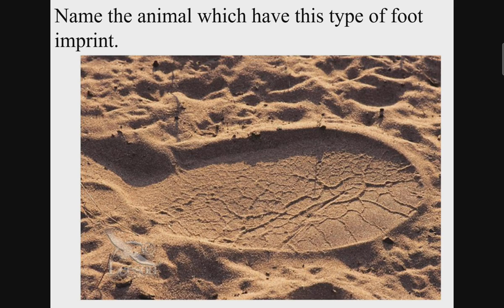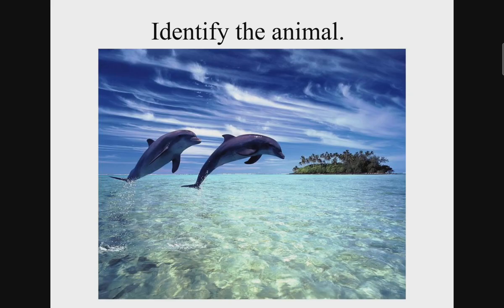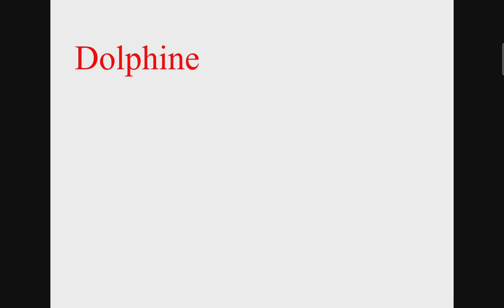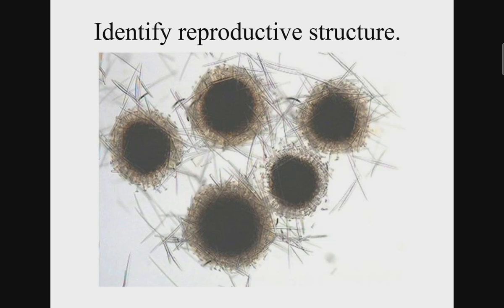Name the animal which has this type of foot imprint. It is elephant's foot imprint. Identify the animals. These are dolphins. Next, identify the reproductive structure. These are the gemmules of sponge.